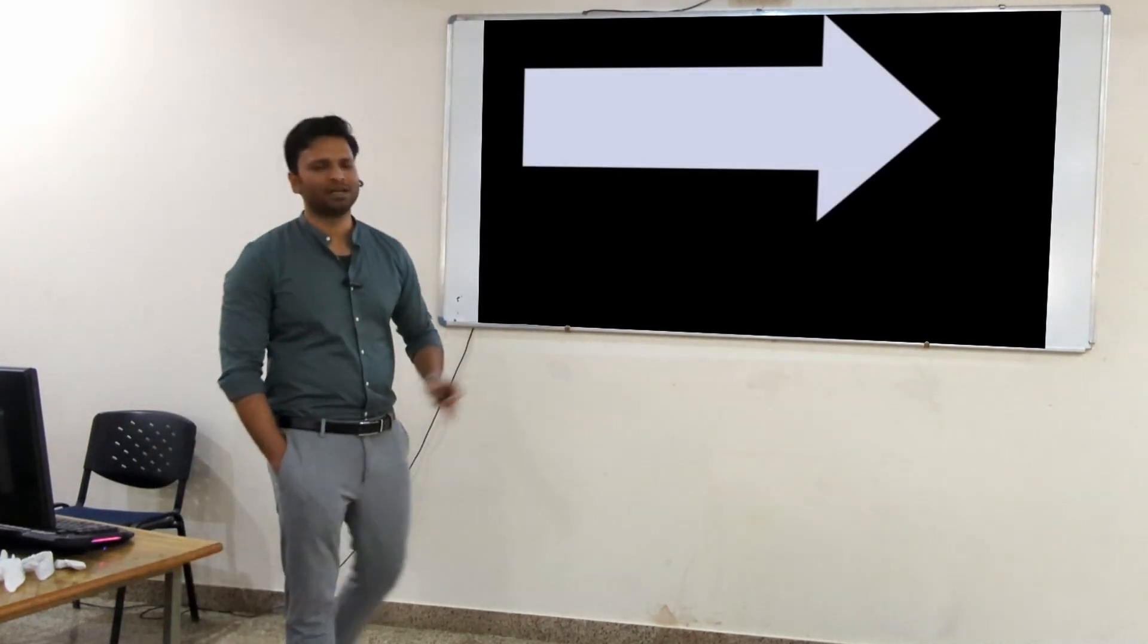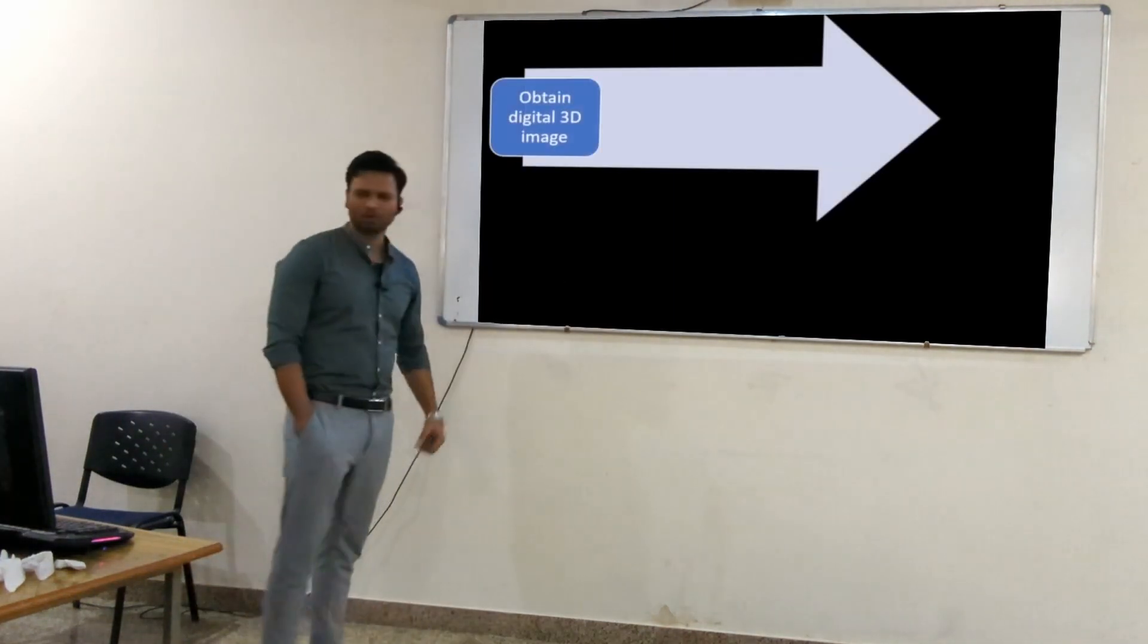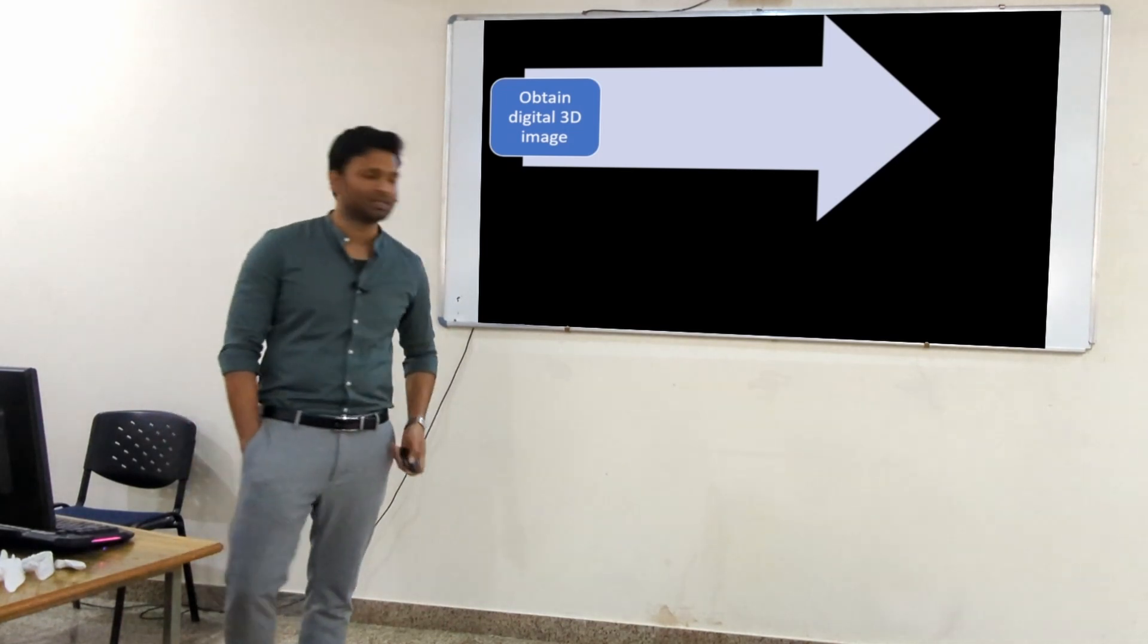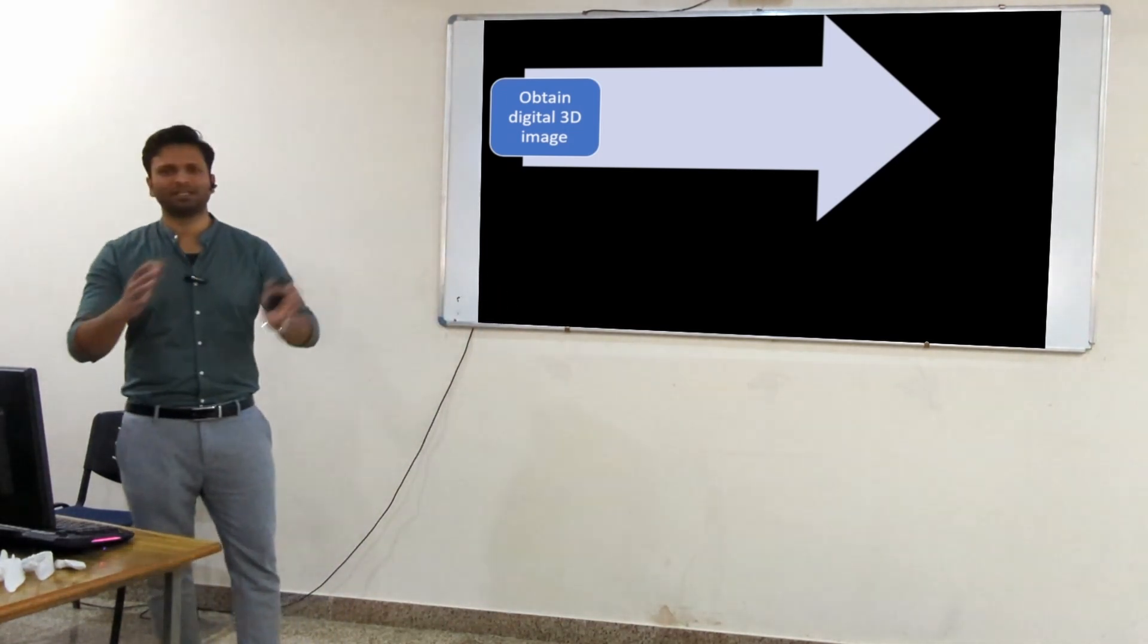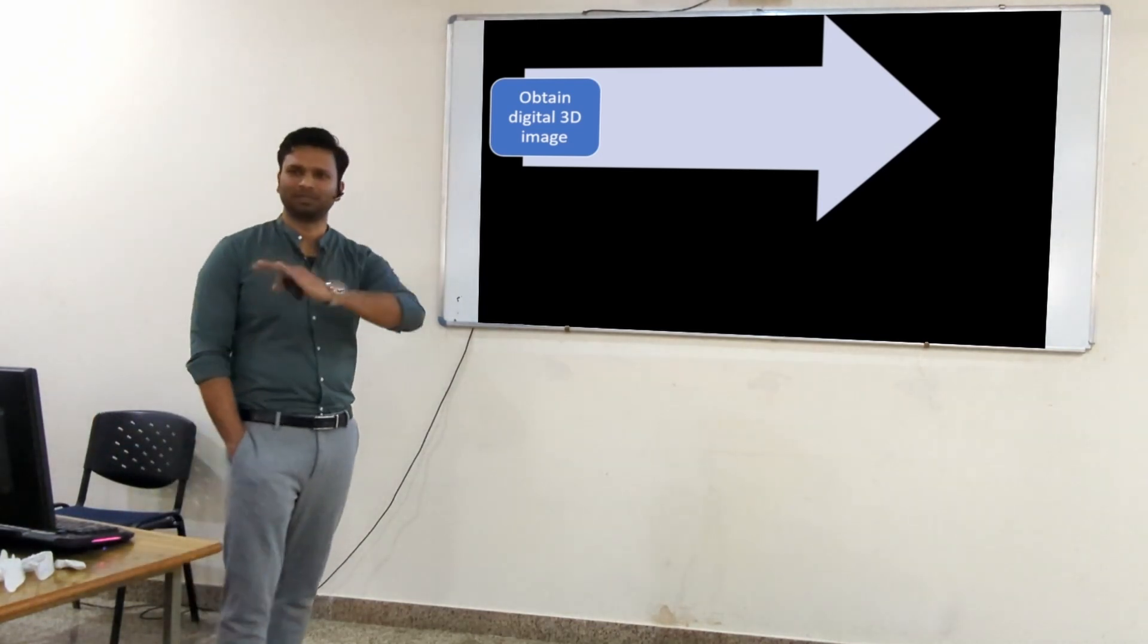So basically, the 3D workflow can be divided into four steps. First is obtaining the digital 3D image. I might use the term 3D image or 3D model interchangeably - both are one thing.